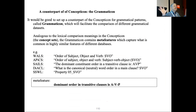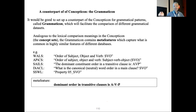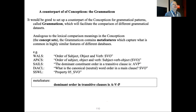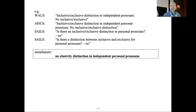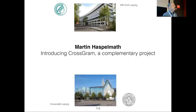The Grammaticon would facilitate comparison of different grammatical datasets. Analogous to the concept sets of the Concepticon, it would contain meta-features which capture what is common across highly similar features in different databases — across WALS, APICS, SAILS, DiACL, and SSWL. The meta-feature would be formulated in some regimented standard language, like 'dominant order in transitive clauses is A, V, P', using A and P as standard concepts in typology. I had this idea five or six years ago and haven't made so much progress, but I'd like to mention it again to motivate myself to work on it further.